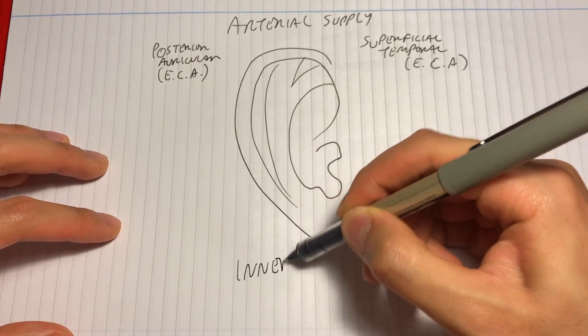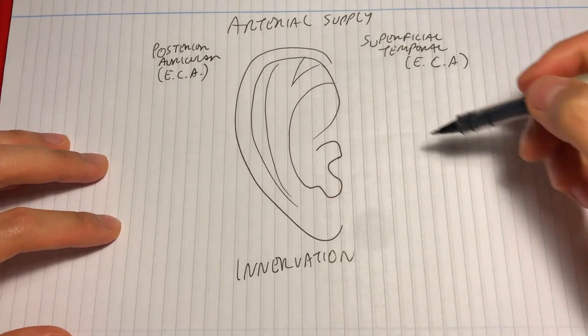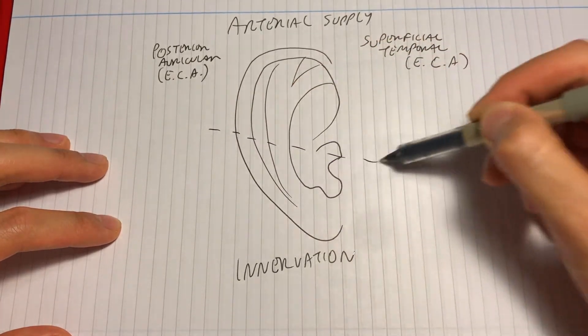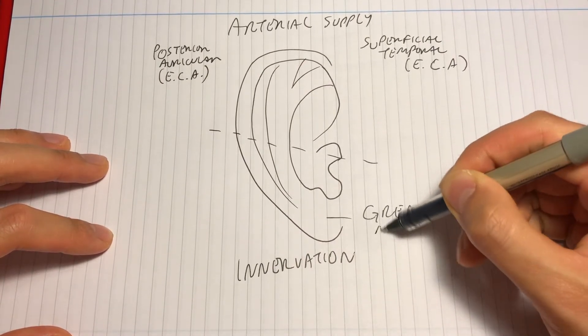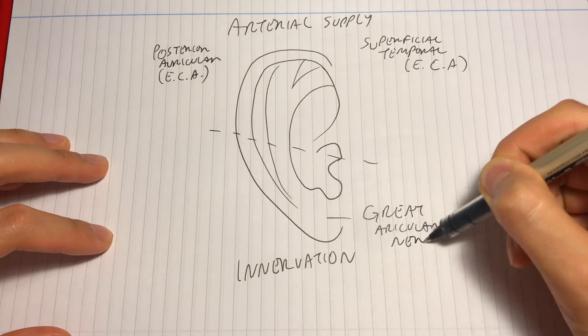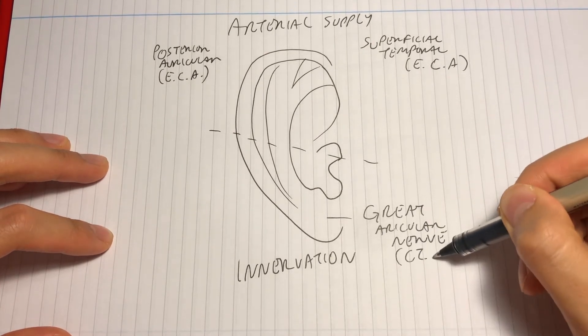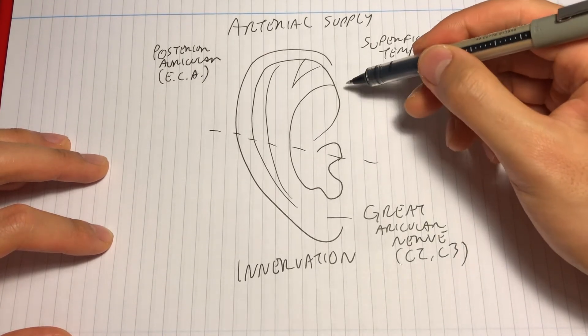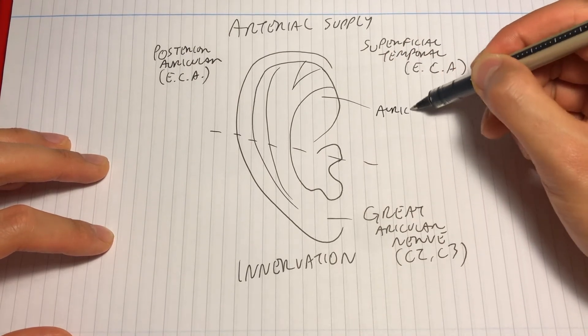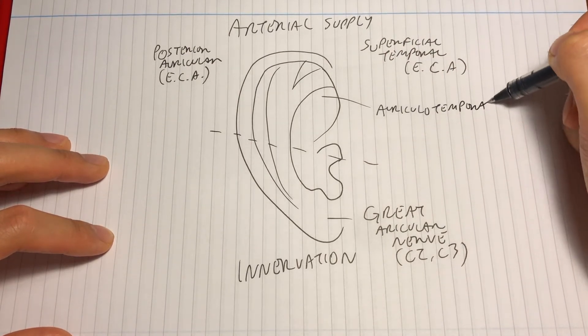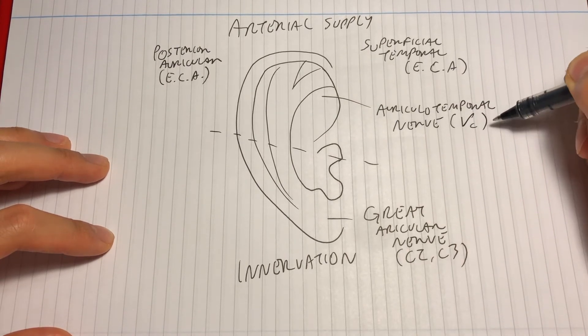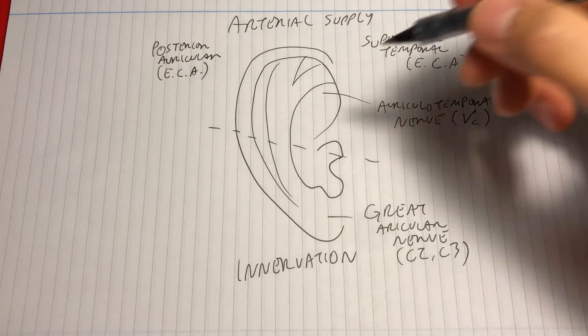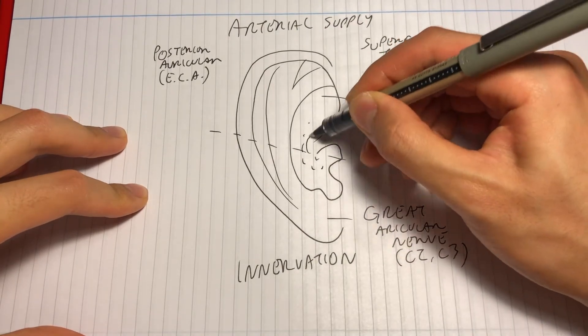Now the sensory innervation of the pinna. Inferiorly, it's from the greater auricular nerve from C2 and C3. This includes the ear lobule. Superiorly, innervation is from the auriculotemporal branch of the mandibular nerve, a branch of the trigeminal nerve. Posterior to the pinna, supply is from the lesser occipital nerve, also from C2 and C3.